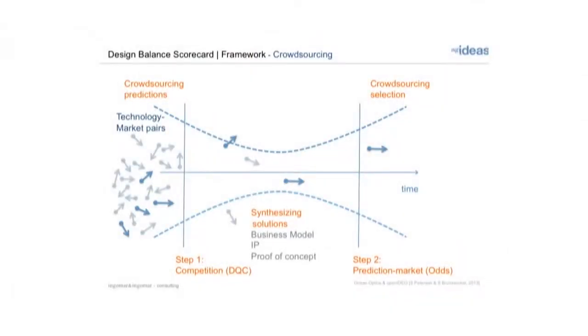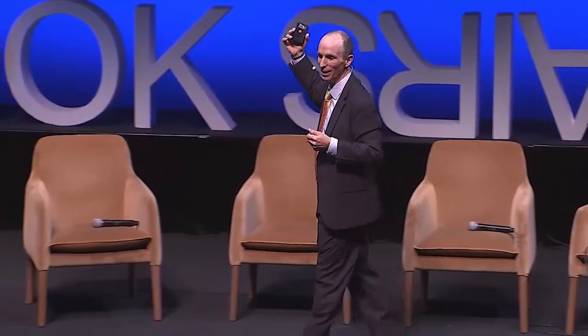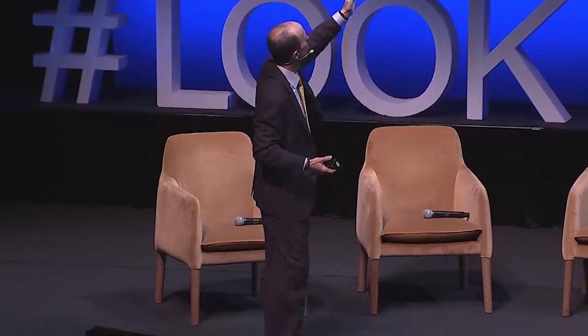They invited companies to submit ideas for new products, basically inviting everybody to participate — no NDAs, just share. If they liked your idea, they'd give the top one $10,000: no questions asked, no commitment. They were planning on giving it to 10 companies, but out of the 100 that submitted, they ended up giving it to 20 because so many were good.